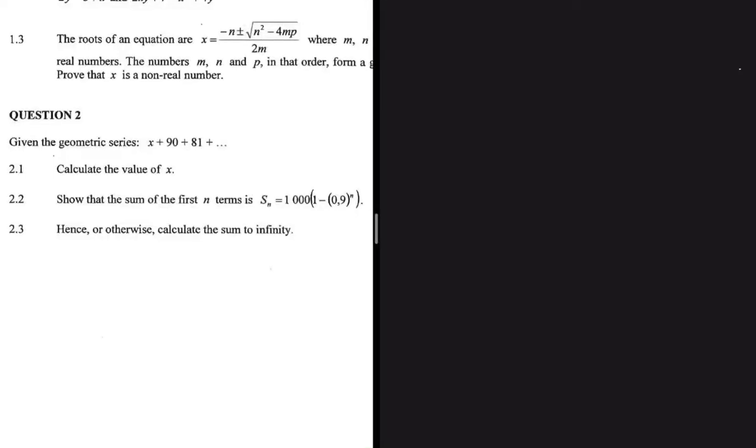We have a geometric series X plus 90 plus 81 and some numbers. Question 2.1 says determine the value of X. For geometric series, we know that we have a common ratio. The common ratio is given by T_n divided by T_(n-1).